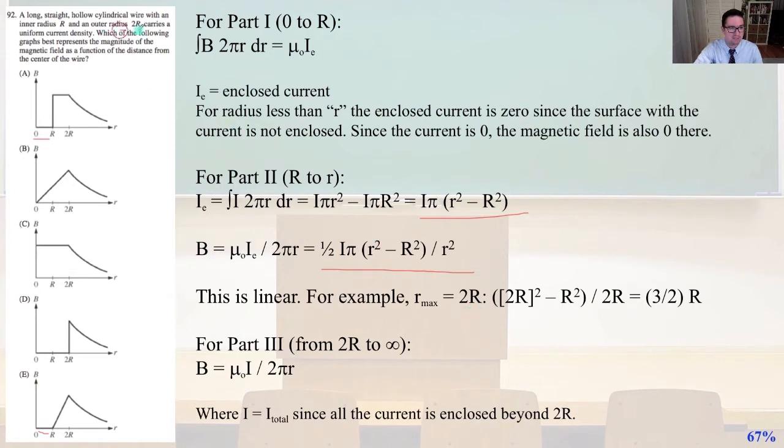which is 2R, as the problem states, the outer radius, 2R quantity squared minus R squared, that quantity divided by 2R is 3 halves R, which is a linear function. So for part three, from 2R to infinity, B is going to about equal μ₀I divided by 2πR, where I equals I_total, since all the current is enclosed beyond 2R. So that would be answer E.